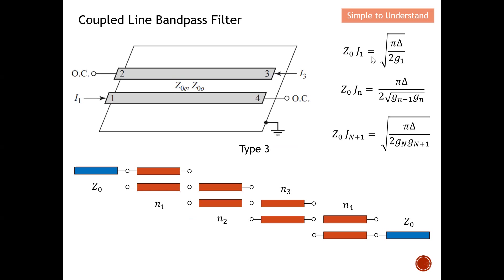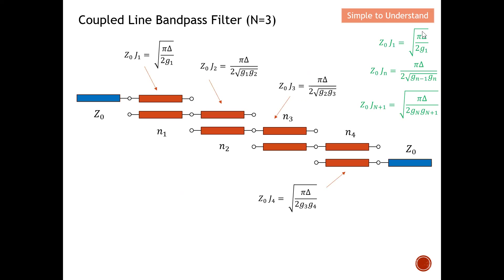Here are the sets of equations we need in order to design the coupled-line bandpass filter. For example, if we're tasked to design N equals 3, we need four coupled-line sections: first, second, third, and fourth. With three sets of formulas, we can achieve the desired bandpass filter output. Let me illustrate further how to implement these three-cell formulas.